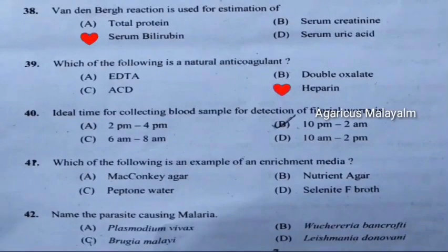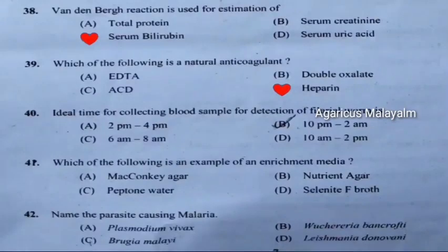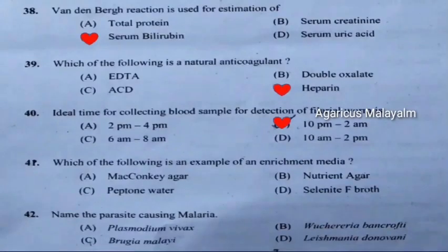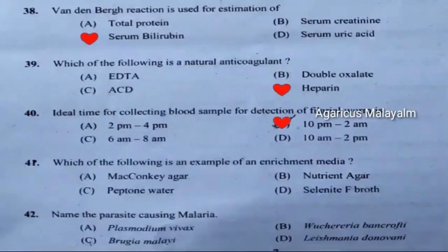Question 40: Ideal time for collecting blood sample for detection of filarial worm — correct answer is option B, 10 PM to 2 AM. Question 41: Which of the following is an example of an enrichment media?